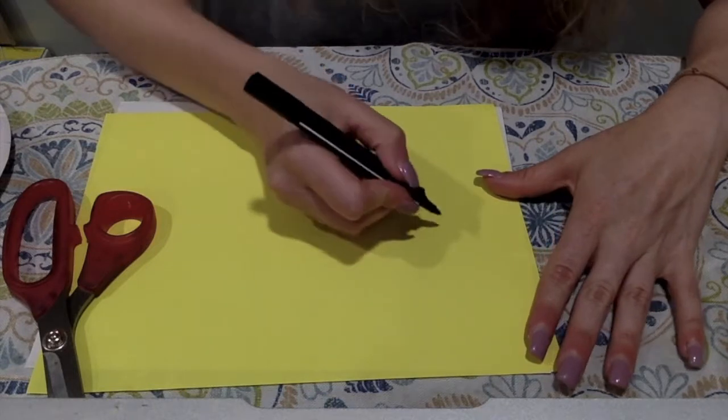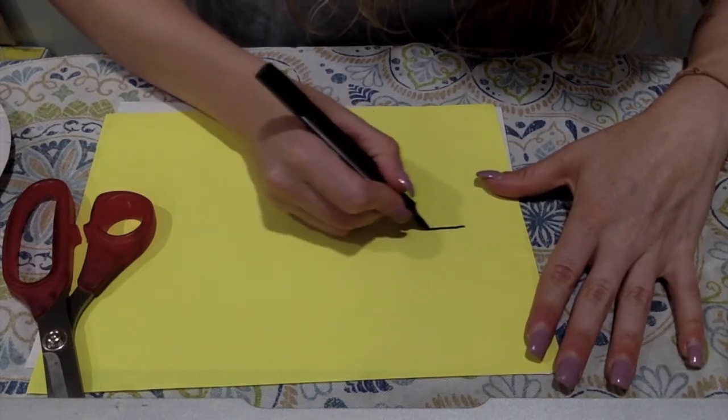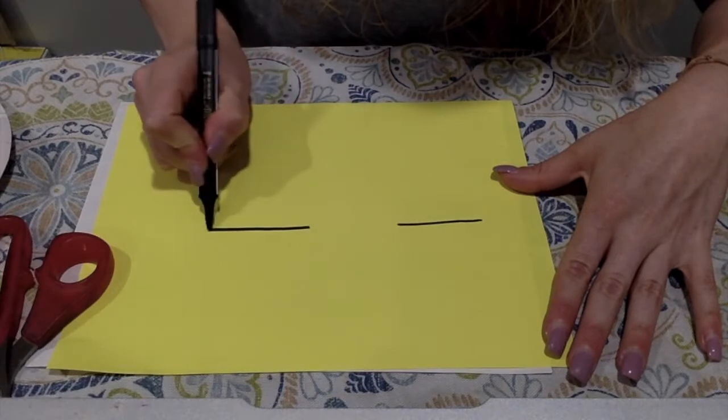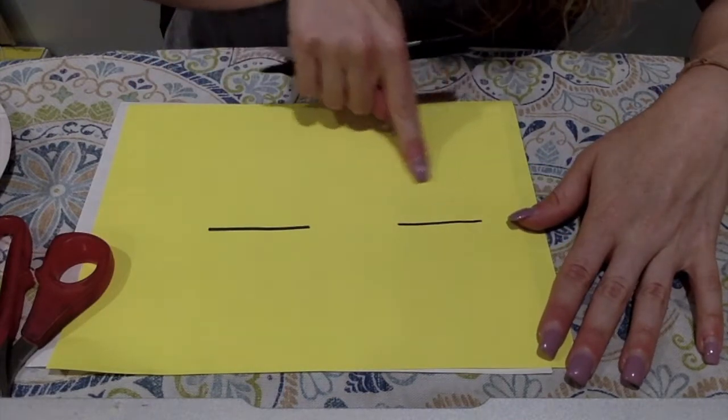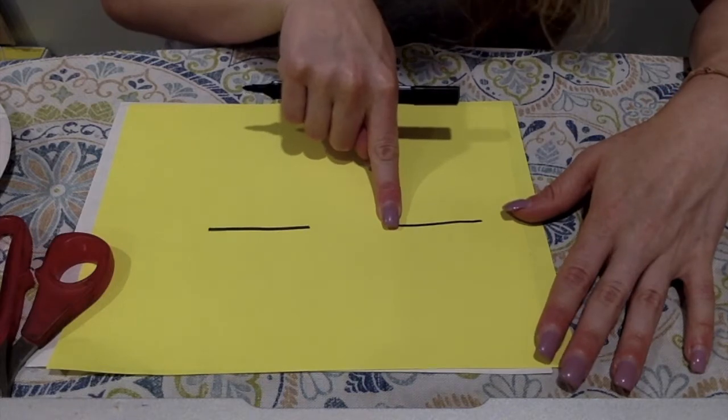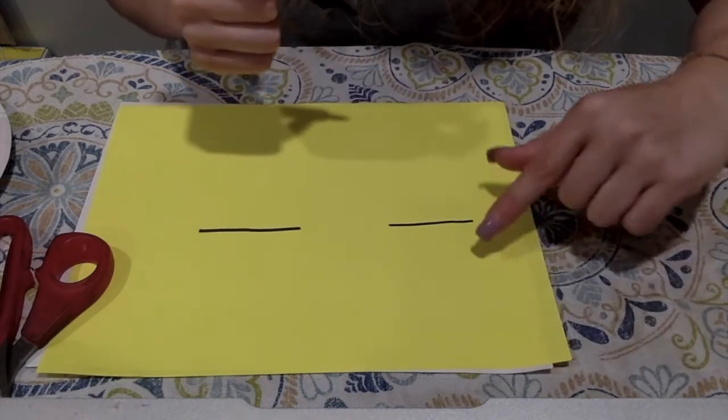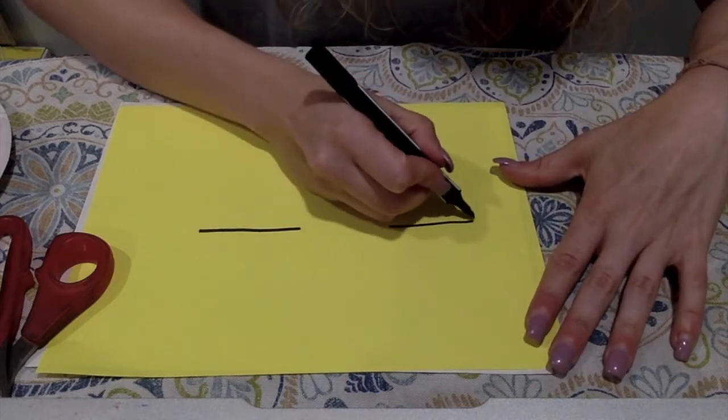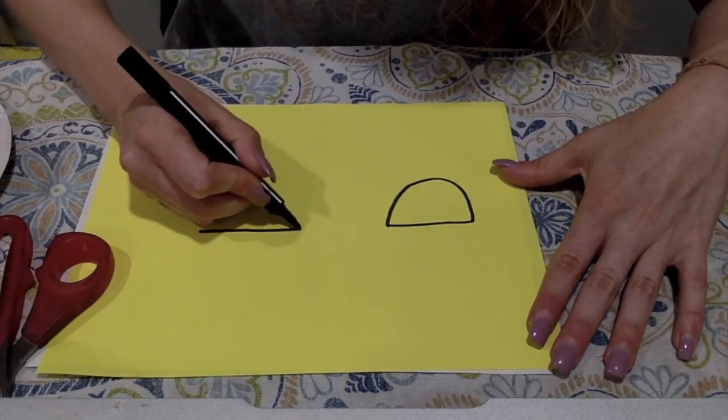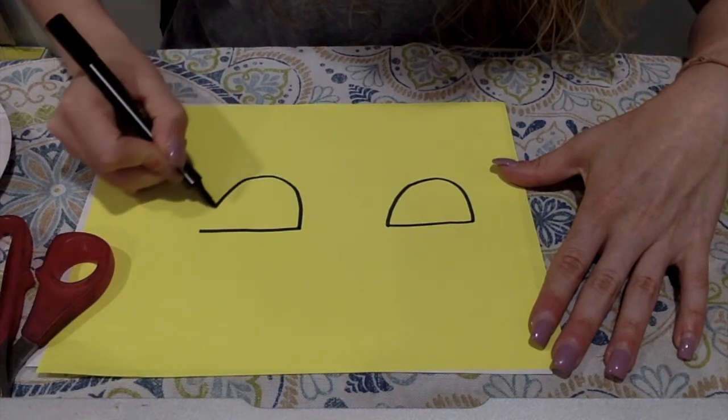So for our fins, we're going to start by making a line across. We can even make two lines across for two fins. And then we're going to go up and around, kind of like we're making a half circle, the letter U, or what I like to tell my students is make a rainbow. So we're going to go up and around, we go up and around and finish that rainbow.